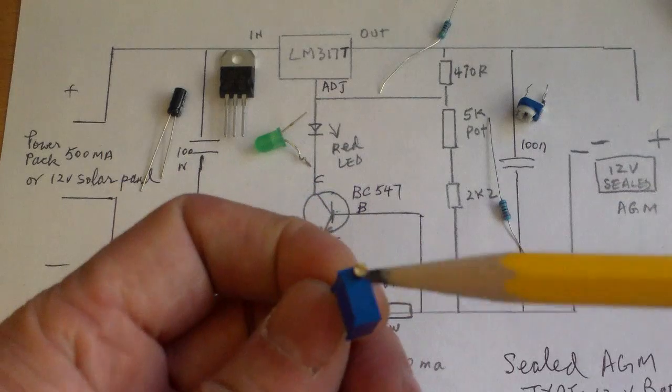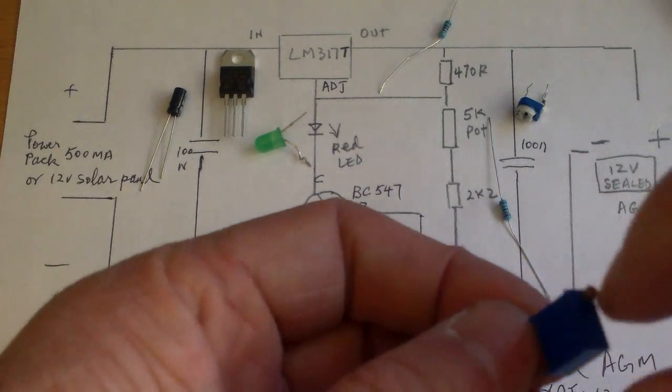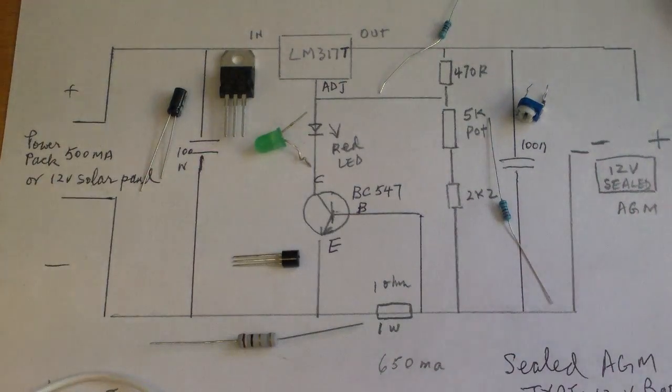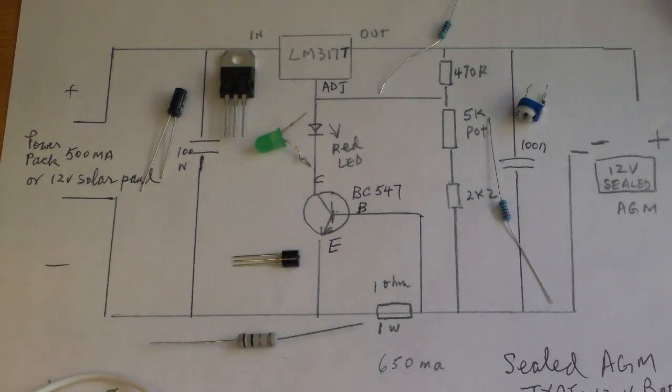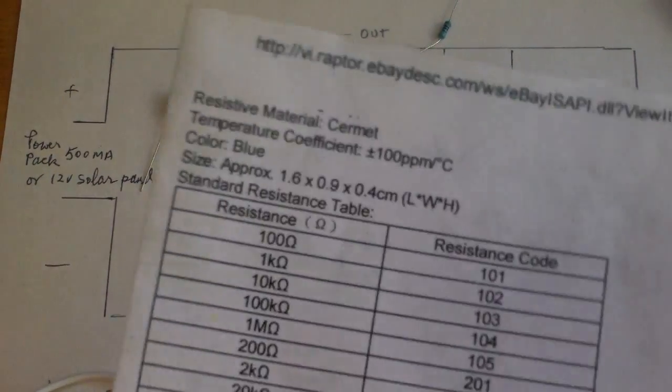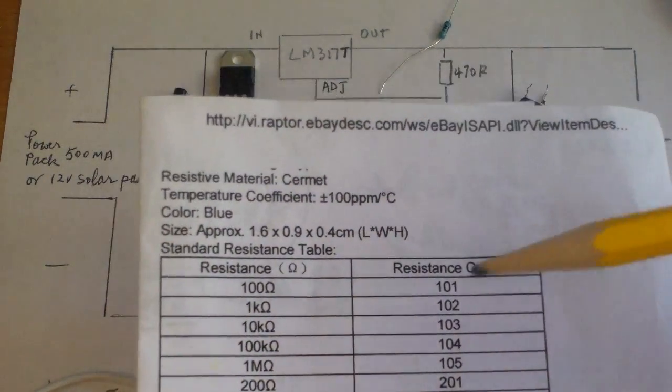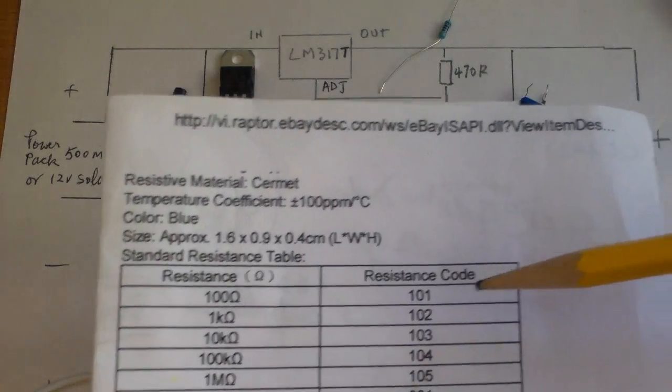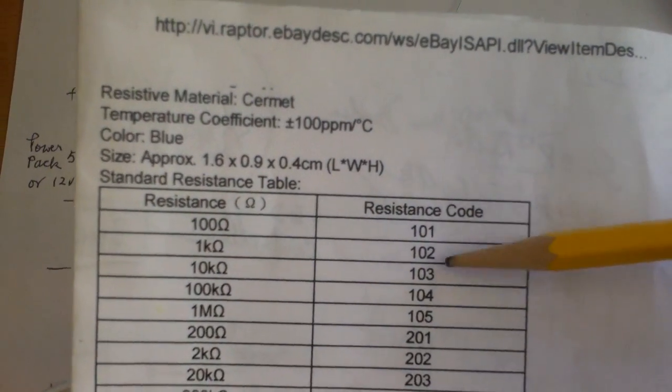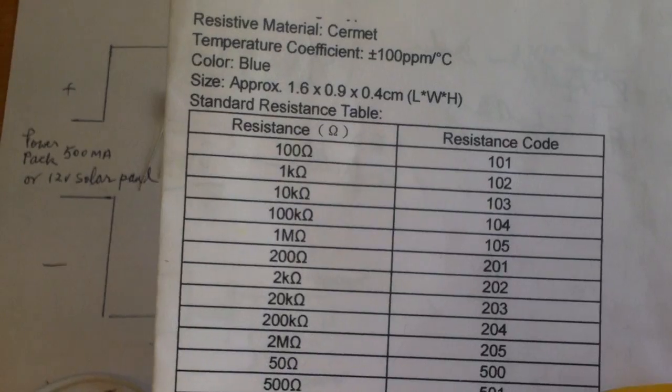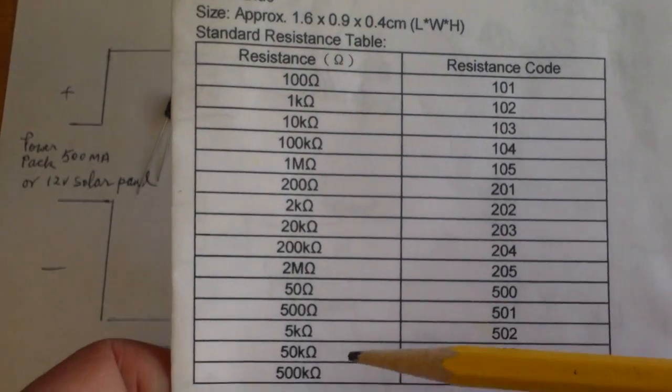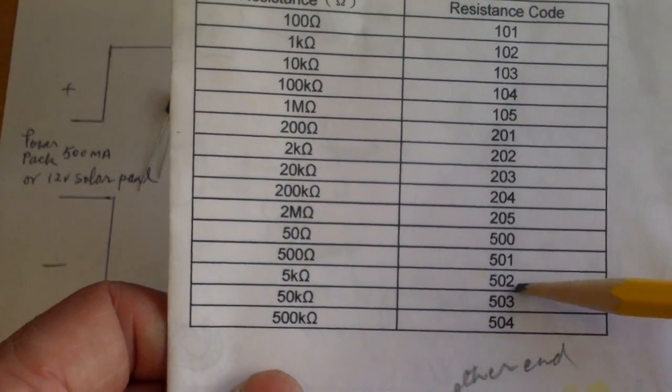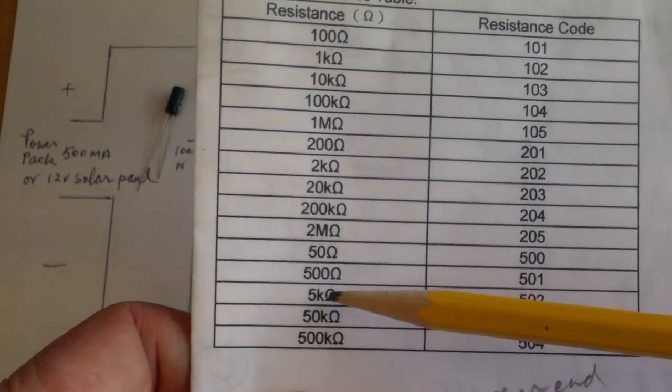This is 502. I've learned a lot when I'm doing this. There's a chart here that tells you the resistance code for the different numbers. Like 502 would be 5k ohm.